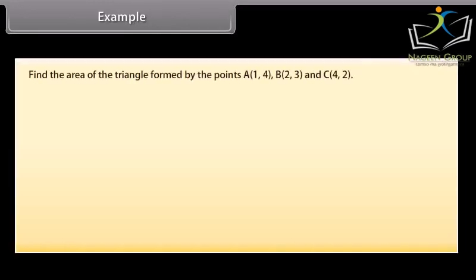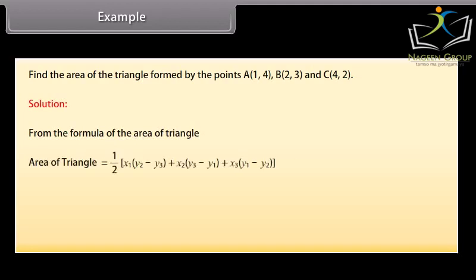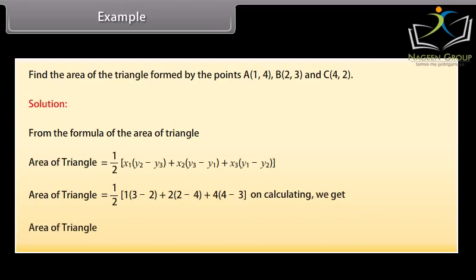Example. Find the area of the triangle formed by the points A, 1, 4, B, 2, 3, and C, 4, 2. Solution. From the formula of the area of triangle, area of triangle is equal to 1 by 2 into X1 into Y2 minus Y3 plus X2 into Y3 minus Y1 plus X3 into Y1 minus Y2. We have area of triangle is equal to 1 by 2, 1 into 3 minus 2 plus 2 into 2 minus 4 plus 4 into 4 minus 3. On calculating we get area of triangle is equal to 1 upon 2 square units.